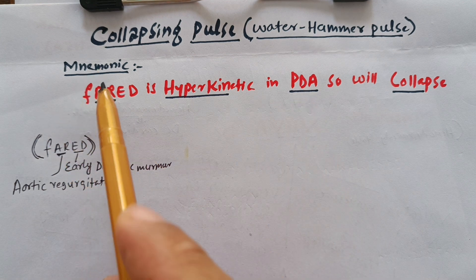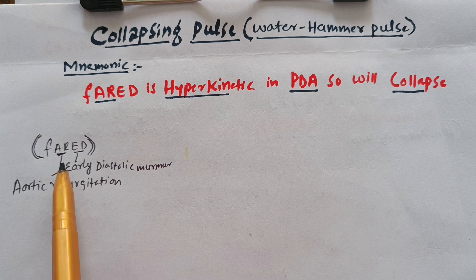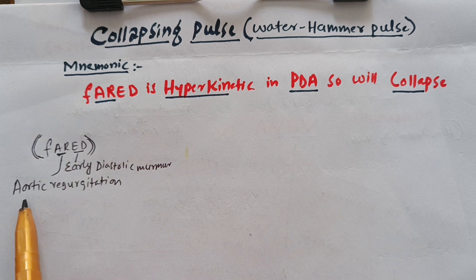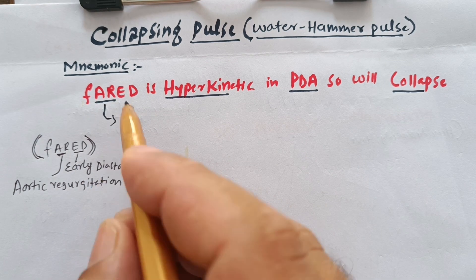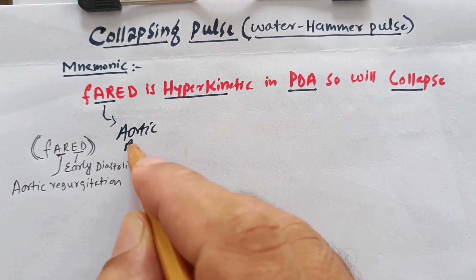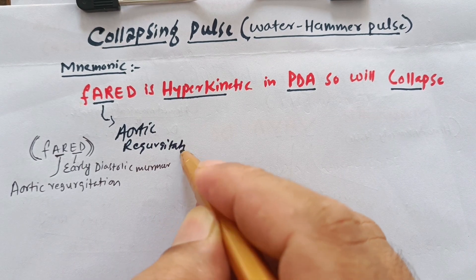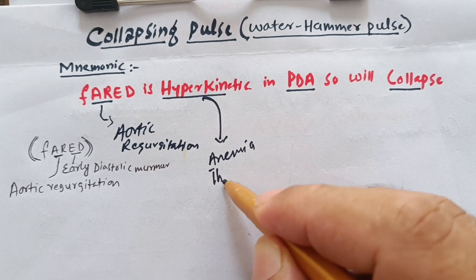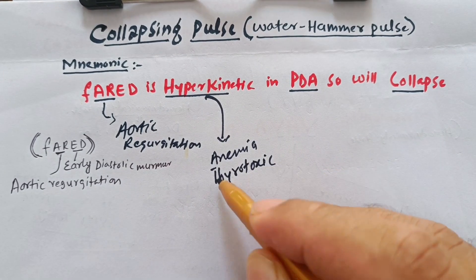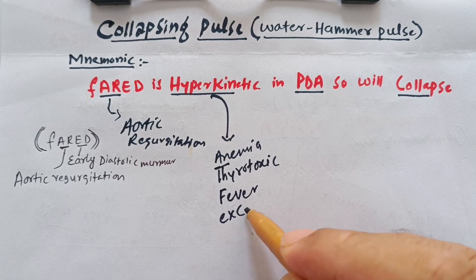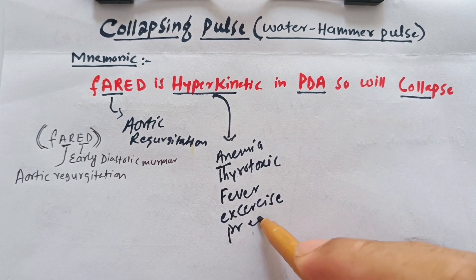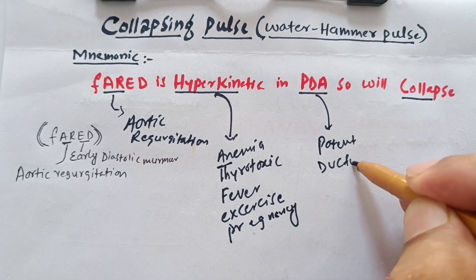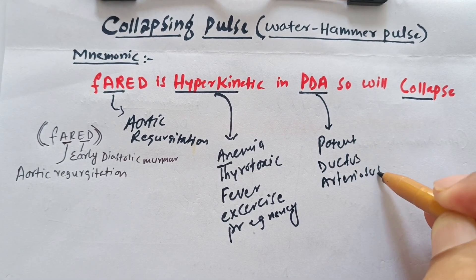For AR — aortic regurgitation — if you remember, there is a video on aortic regurgitation. AR gives an early diastolic murmur. The hyperkinetic conditions include anemia, thyrotoxicosis, fever, exercise, and pregnancy. PDA stands for patent ductus arteriosus.